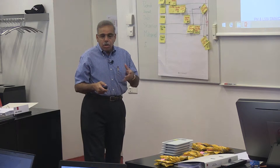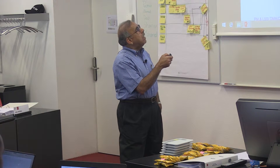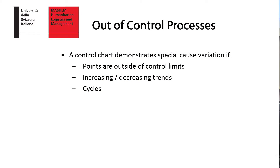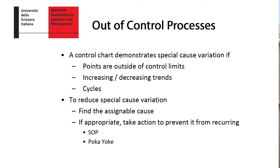Some terminology is useful here: is the process under control or is it out of control? That is what you are trying to find out. Whenever you are out of control, the control chart is showing you that some kind of special thing is happening, and therefore you need to take a corrective action.